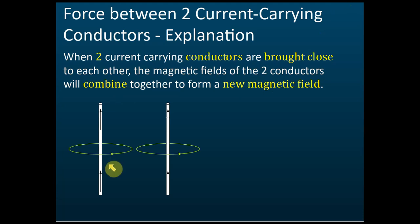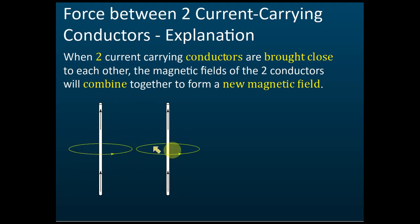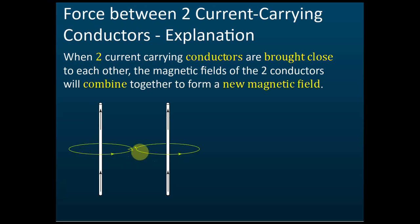Let's say we have two current-carrying conductors, both with current flowing in the same direction, brought close to each other. When the current flows in the same direction, this is the resulting magnetic field. Let's check the directions of the magnetic field. We can see that at the point between the two conductors, the fields are in opposite directions — one going in, one coming out. So, if the fields are in opposite directions, will this make the field stronger or weaker?